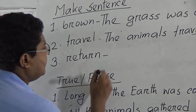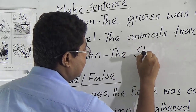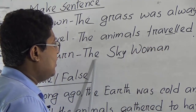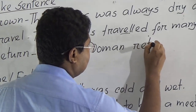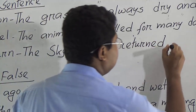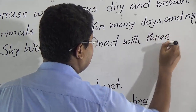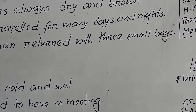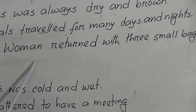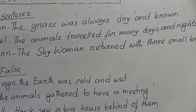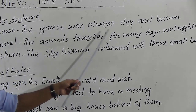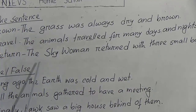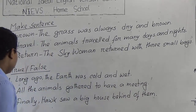Next word: return. The Sky Omen — Sky Omen is the name of that character — so we write it with a capital letter. 'The Sky Omen returned with three small bags.' Look at the sentence: return — 'The Sky Omen returned with three small bags.' Quick recap: (1) brown — 'The grass was always dry and brown.' (2) travel — 'The animals traveled for many days and nights.' (3) return — 'The Sky Omen returned with three small bags.'